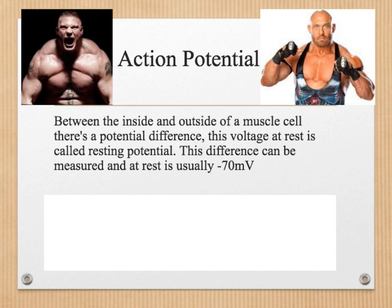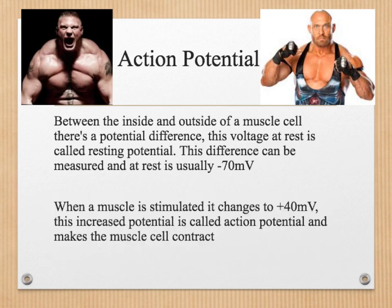Between the inside and outside of a muscle cell there is a potential difference. This voltage at rest is called resting potential, and the difference can be measured and is usually around minus 70 millivolts. During exercise this then changes as the muscle is stimulated to contract, where it changes to plus 40 millivolts. This increase in potential is called the action potential, and it is these two different voltages that we will be looking at in regards to ECG.